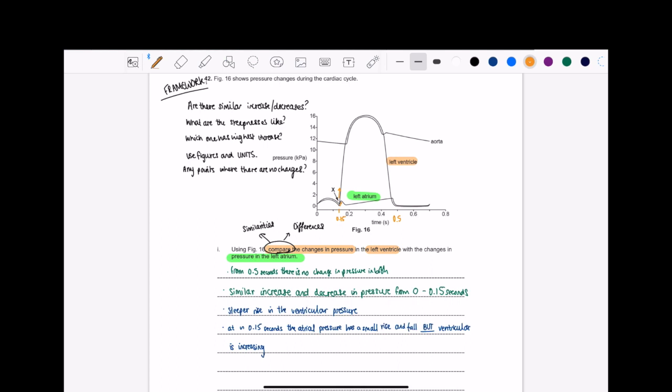So I can identify it on the diagram where it is. We're not going to talk about the aorta at all, that's fine. But the question is, what does compare mean? Compare means look at the similarities and differences. So the similarities I've written in green and the differences in blue.